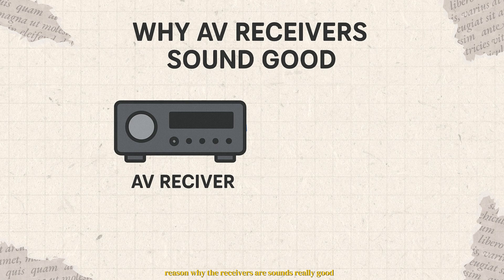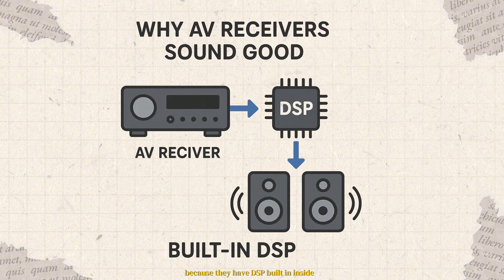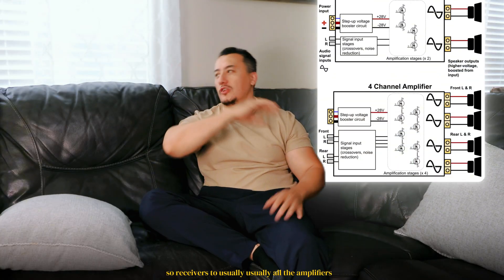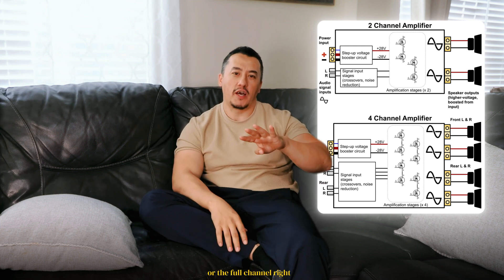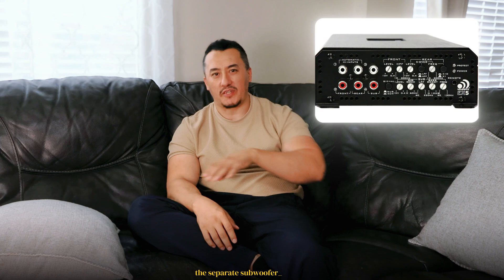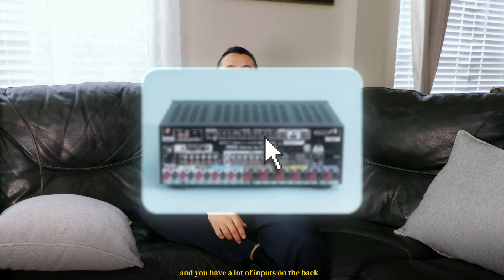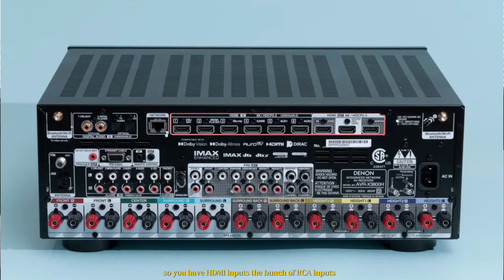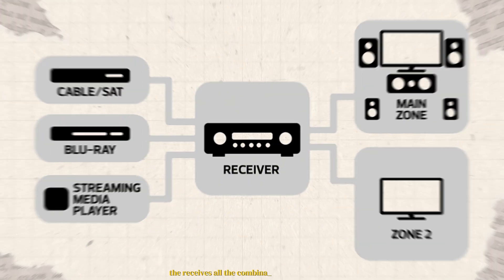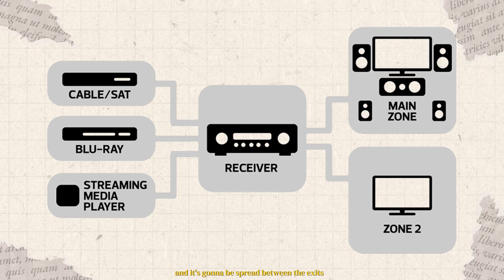The reason receivers sound really good is because they have DSP built in. Regular amplifiers typically output left and right channel, or four channels. Car audio might have five channels with a separate subwoofer output. In home audio, if you have that kind of multi-channel setup, that's going to be a receiver. Receivers can receive multiple signals — they have a giant panel on the back and are usually much larger. For example, this Denon receiver has a lot of inputs: HDMI inputs, a bunch of RCA inputs.